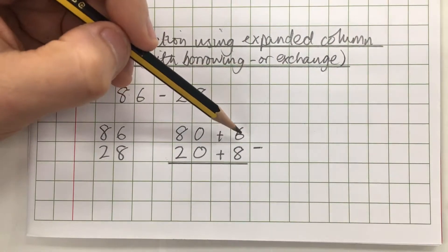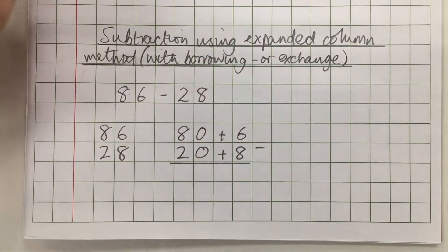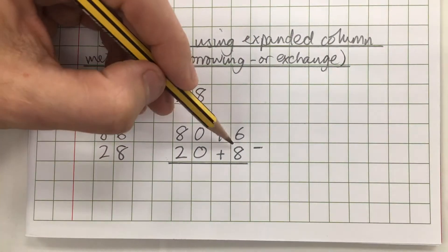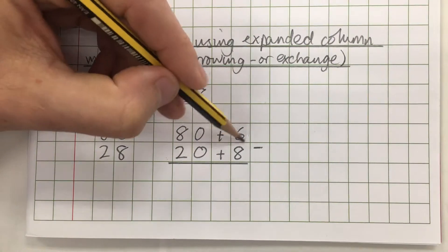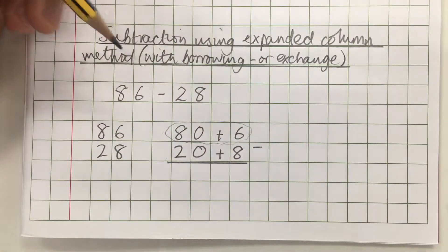First off I can see that if I'm looking at my ones column I've got 6 minus 8. Now I can't do that so I've got to look at my 6. My 6 originally was part of this 86 so it's part of the same number.